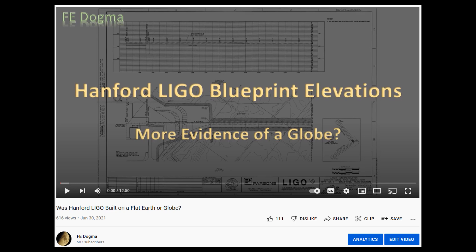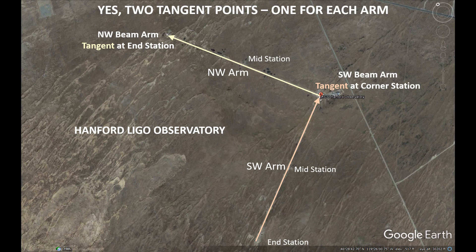About a year ago LIGO was in the middle of the Flat Earth vs Globe debate, so I made a video. And recently my video has been the center of another debate. So yes, I will confirm there are two tangent points, one for each arm, and I did this for a very good reason — but I'll get to that a little bit later.